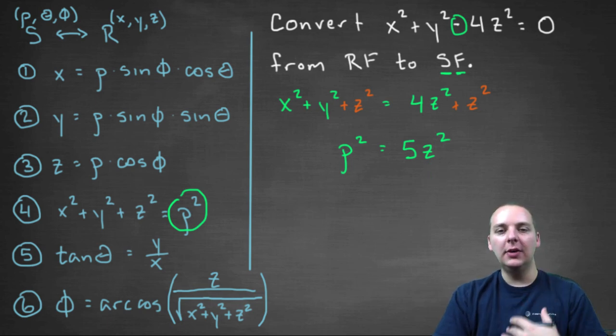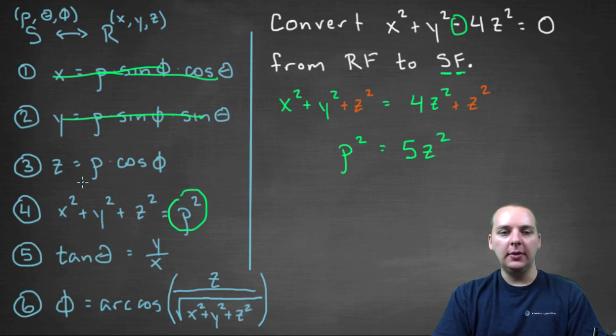So how can I get rid of a z and get instead ρs, θs, and φs? Well I see, obviously not number one because that doesn't have any z's, obviously not number two either. Maybe three, I've already used number four. Definitely not number five.